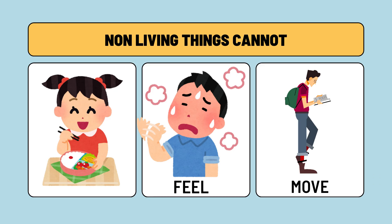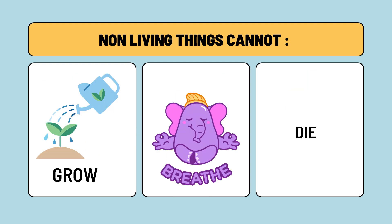Non-living things cannot eat — your bed, bottle, cupboard, or umbrella cannot eat anything. They cannot feel, and they cannot move from one place to another. Your books cannot move on their own. Non-living things also cannot grow, cannot breathe, cannot die, and cannot reproduce. They are the opposite of living things.